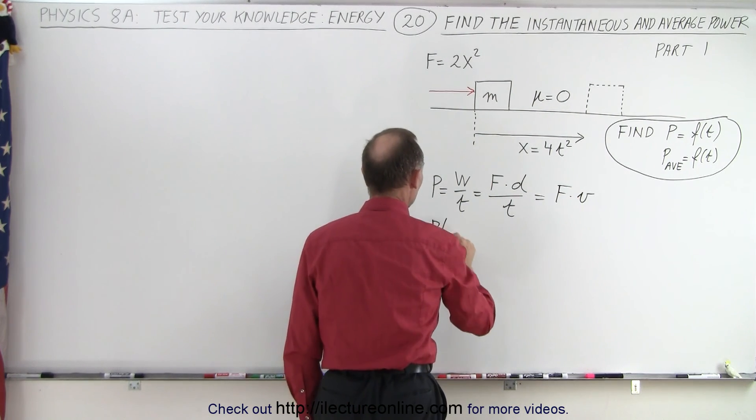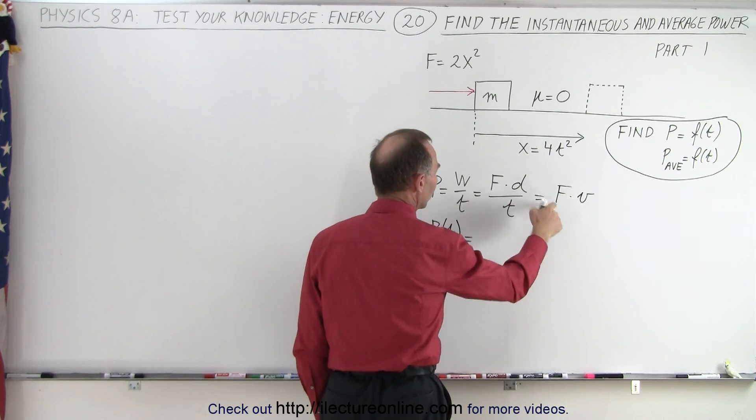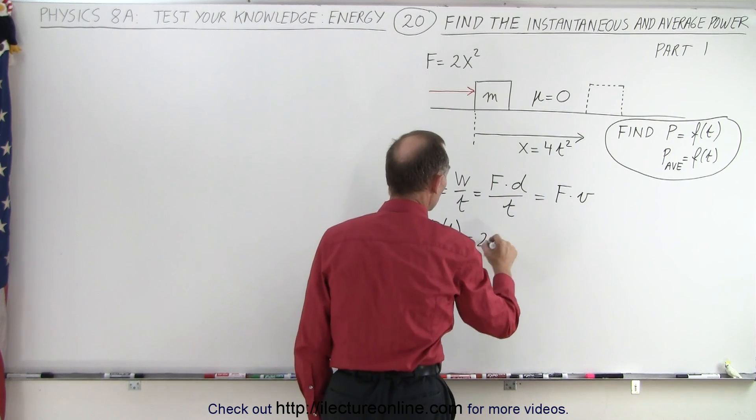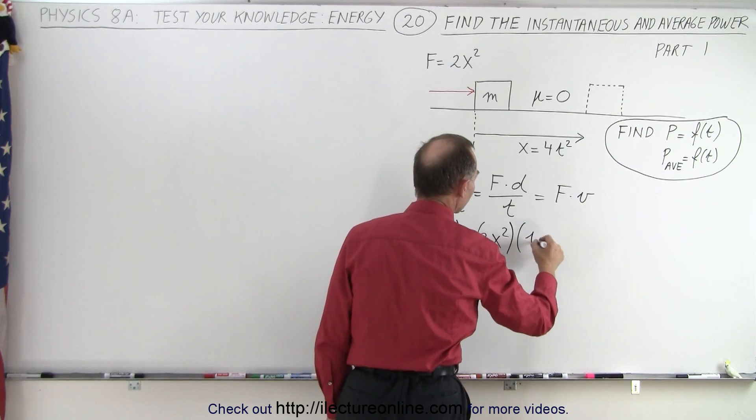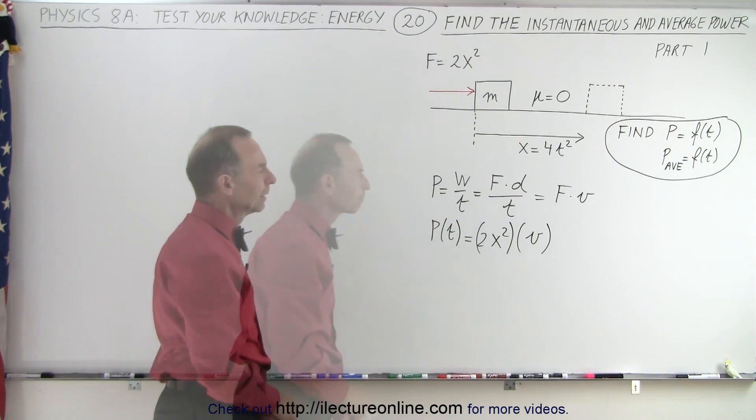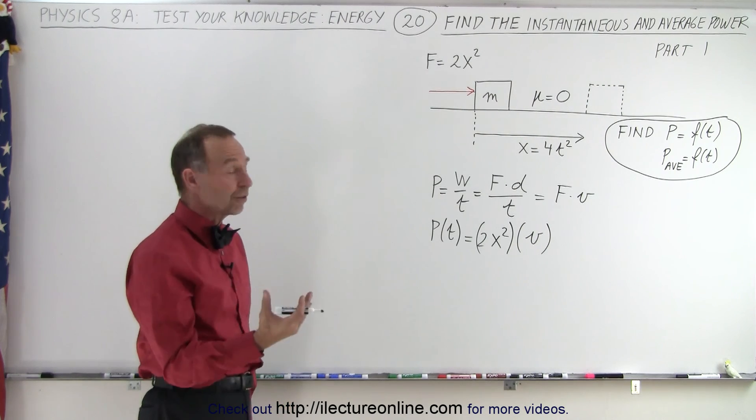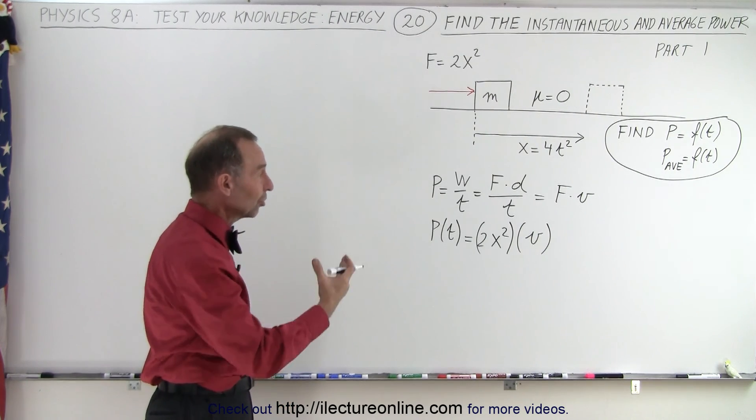So the instantaneous power as a function of time is equal to the force, which is 2x squared, multiplied times the velocity. Well, let's see here. They didn't give us the velocity, but they gave us position.